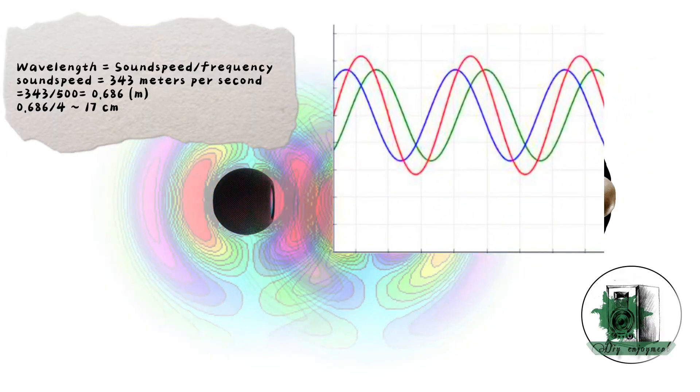In the graph, the blue curve represents the response from the front driver, while the green curve represents the response from the rear driver. However, the resulting curve, shown in red, is the combined response of both drivers. Notice that the rear driver introduces a delay equivalent to a quarter wavelength or 90 degrees phase delay, as evident in the graph.